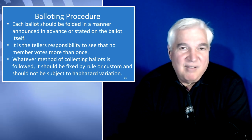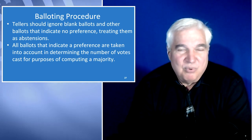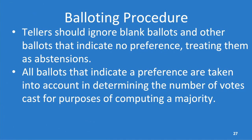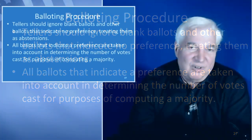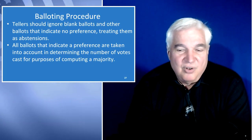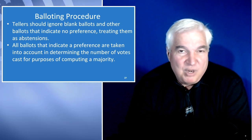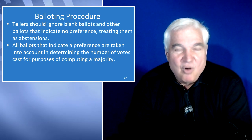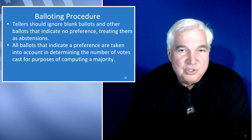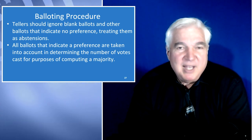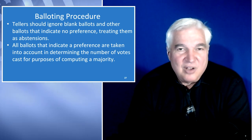Robert's Rules talks about the balloting procedure: each ballot should be folded in a manner announced in advance or stated on the ballot itself. It is the teller's responsibility to see that no member votes more than once. Whatever method of collecting ballots is followed, it should be fixed by rule or custom and should not be subject to haphazard variation. Tellers should ignore blank ballots and other ballots that indicate no preference, treating them as abstentions. All ballots that indicate a preference are taken into account in determining the number of votes cast for purposes of computing a majority.